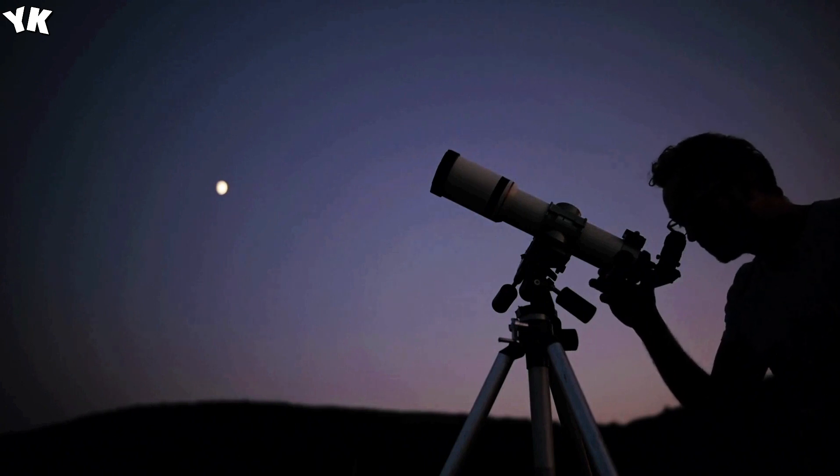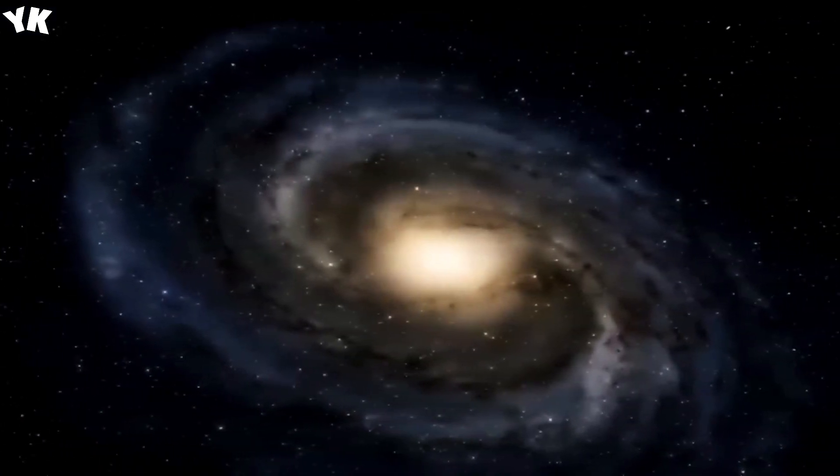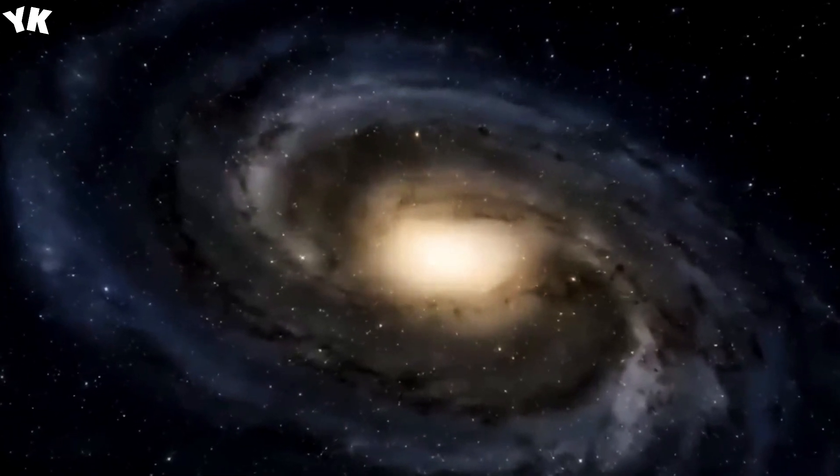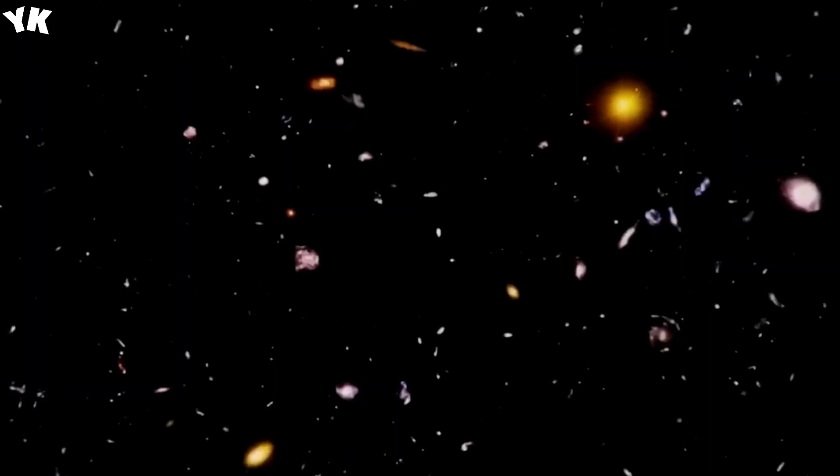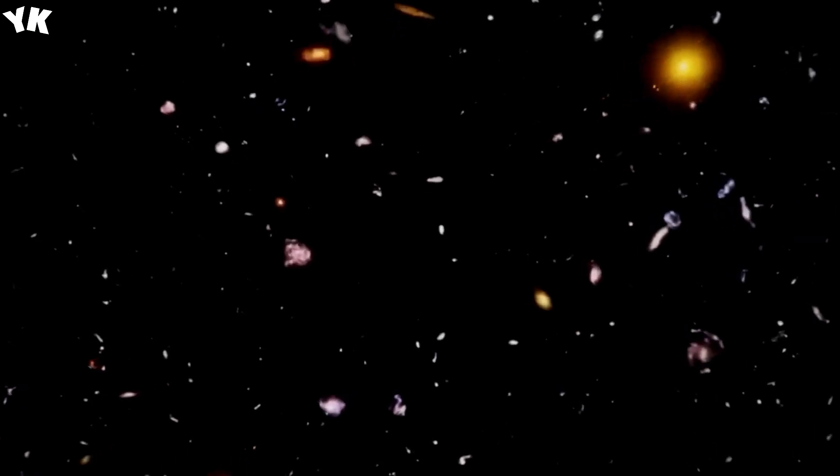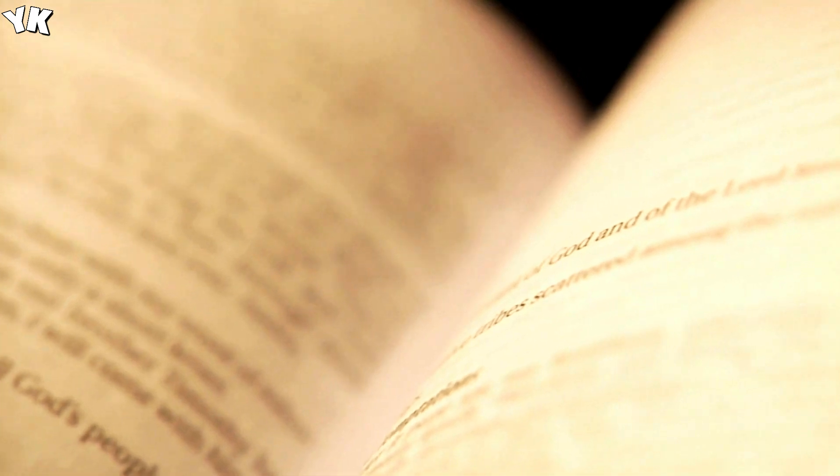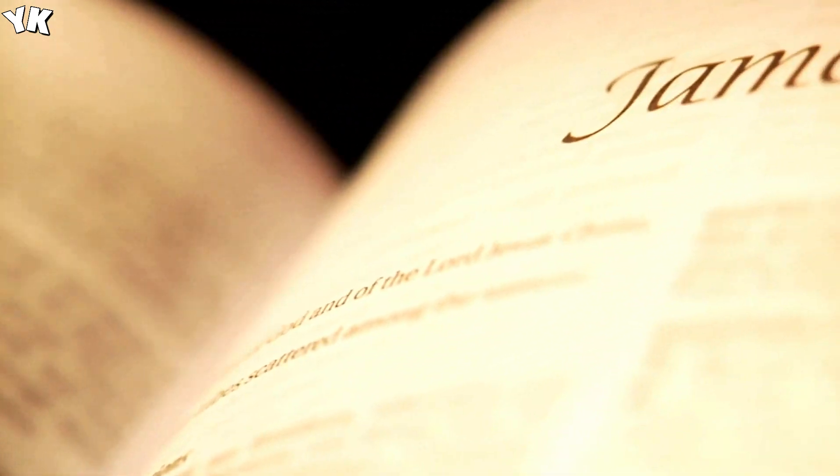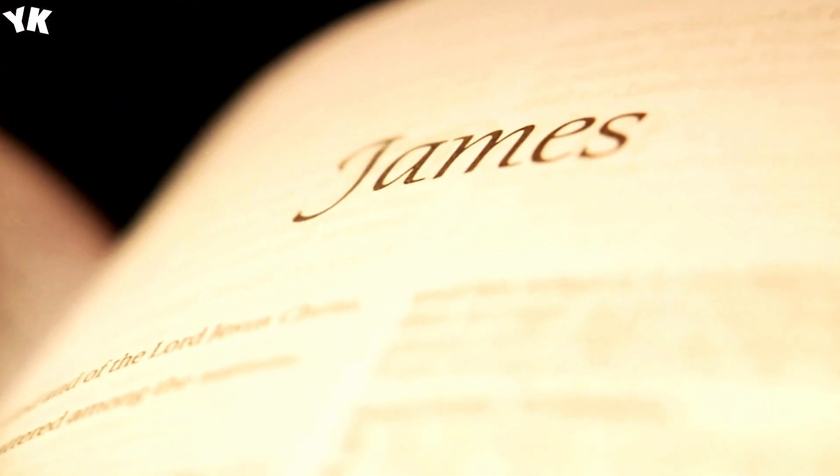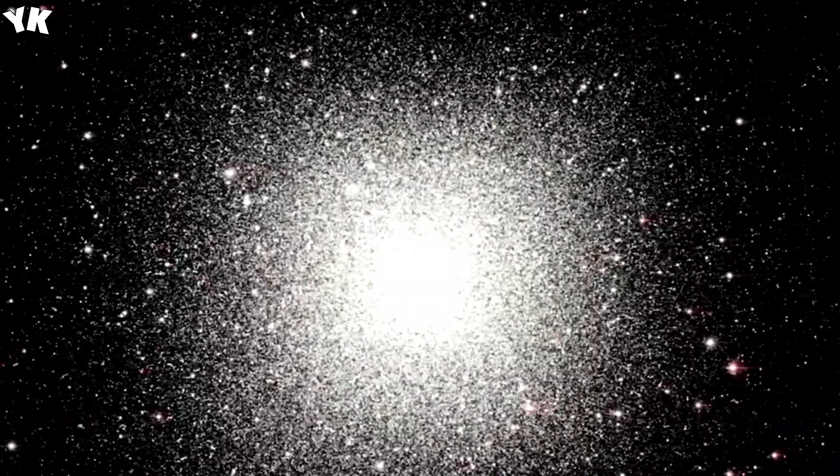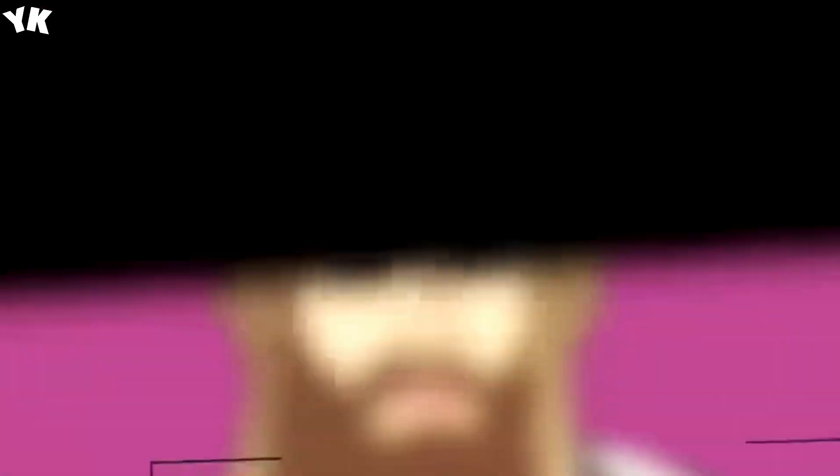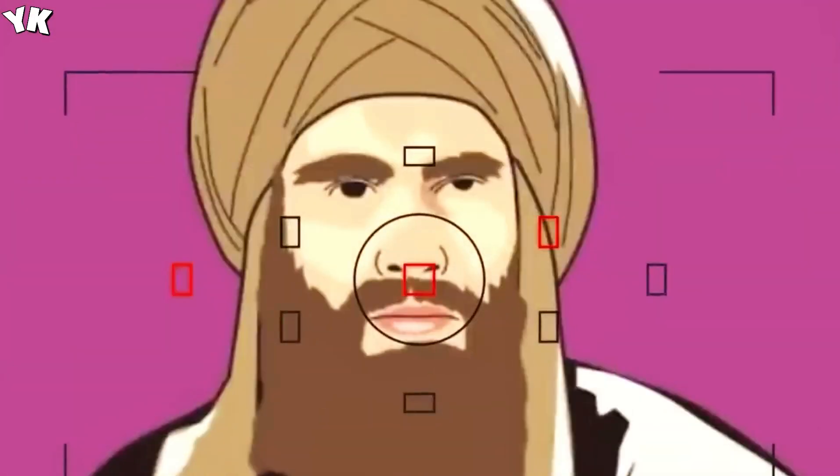When the Milky Way collides with Andromeda, one might imagine a cataclysmic event with stars and planetary bodies smashing into each other, causing explosions and releasing gases and stardust. However, the reality is more nuanced. Despite the apparent density of galaxies, there's still a significant amount of empty space between stars and planets. Consequently, during the collision, there will likely be little to no direct collisions between celestial bodies. Instead, stars and planetary bodies from both galaxies will fill in the void of the other with minimal actual impact.